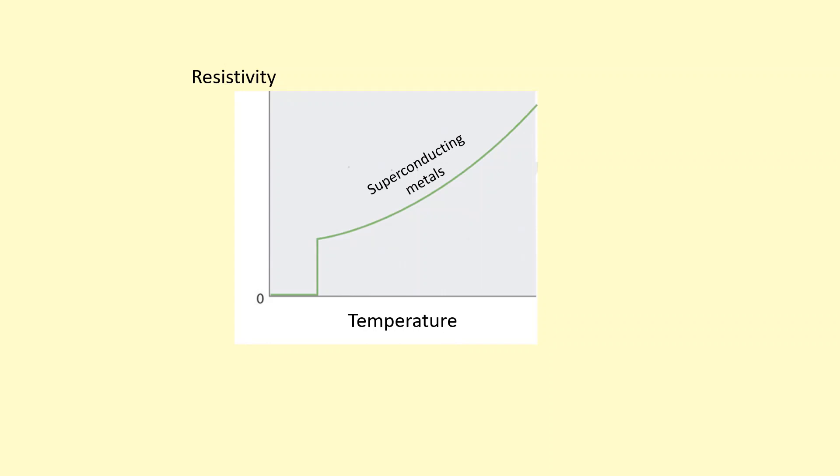Superconducting materials are similar in that as you decrease the temperature, the resistivity also decreases. However, what happens with these is that you reach a critical temperature here where the resistivity just drops to zero.